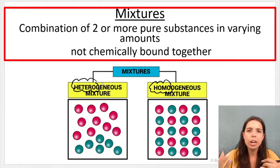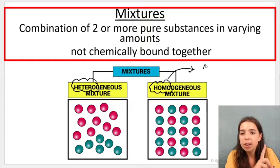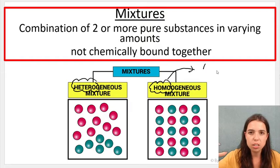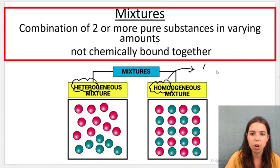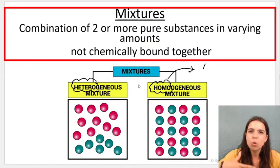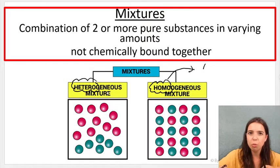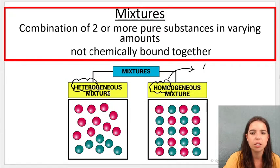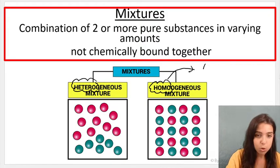If the word homo, hetero doesn't mean anything to you, think of homo, homogenous as being one single constant composition. So it's the same throughout. You can't tell the difference between the parts. Hetero means many or multiple. So a heterogeneous mixture means you can see it's not uniform composition. You can see the difference. So air is actually homogenous. Awesome.